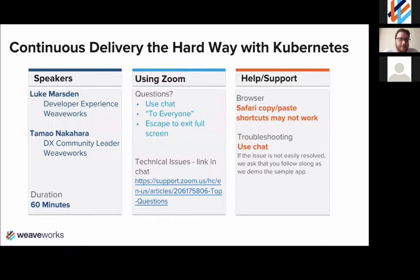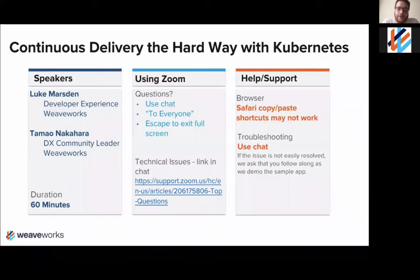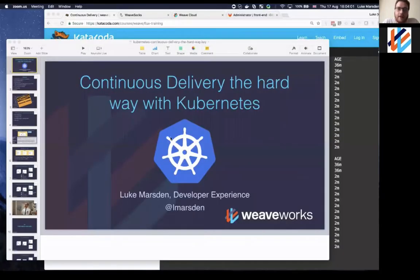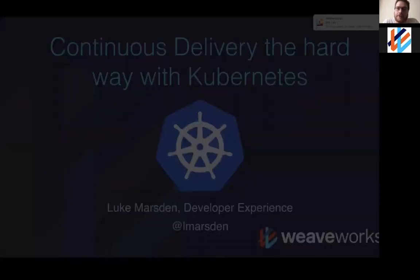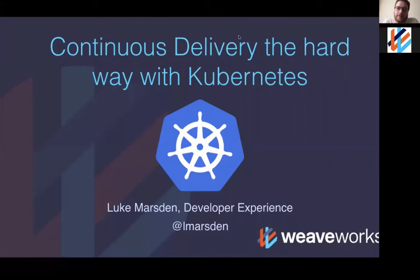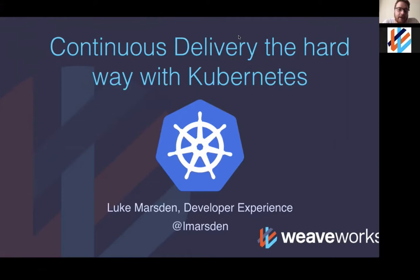Thank you for coming. I'm going to talk today about continuous delivery the hard way with Kubernetes. The reason I call it the hard way is that we're going to start with a simple implementation of continuous delivery with Kubernetes, and then make it increasingly complicated. Every time we make it more complicated, I'll explain why — what the limitations of the previous design were and why we're adding complexity to improve it. Let's take a look at the agenda.